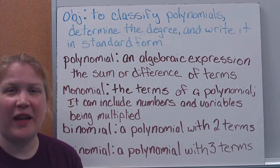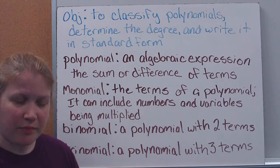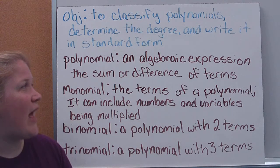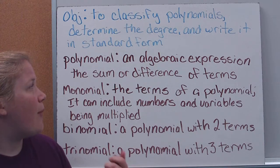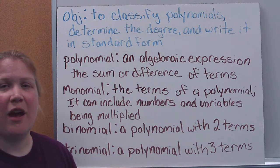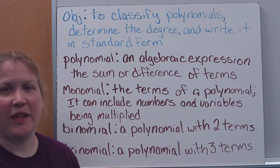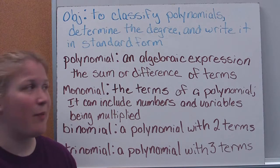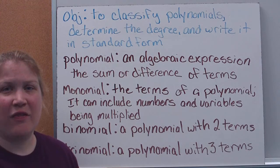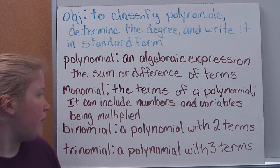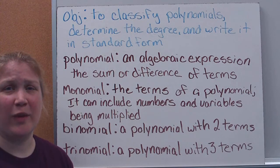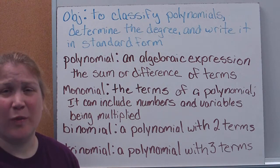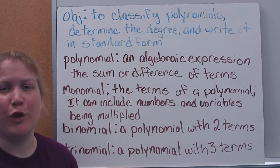So I started out here by defining some of these for you, because this is your first foray into polynomials. A polynomial is an algebraic expression that is the sum or difference of terms. A monomial would be each term in the polynomial — basically it includes numbers and variables that we're multiplying together. A binomial is a polynomial that has two terms in it, and a trinomial is a polynomial with three terms. Any polynomial with more than three terms we just refer to as polynomial — it doesn't have a specific designation.